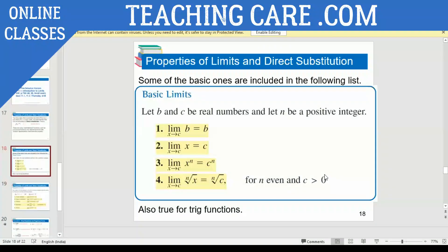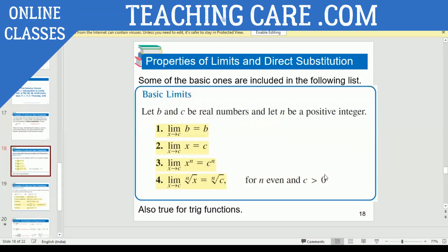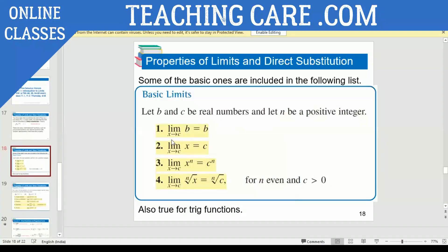What are the basic limit properties? Let B and C be real numbers — you can name them whatever you want — and N be a positive integer. The first property: limit X approaches C of B is simply B. The second property: limit X approaches C of X equals C, meaning a constant value. And limit X approaches C of X to the power N means you replace X with C, giving C to the power N.